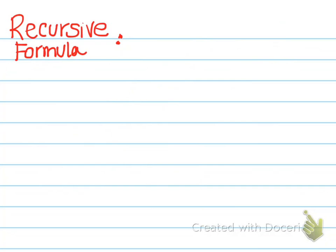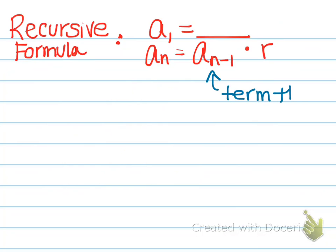We also have recursive formulas for geometric sequences. It looks very similar where you need the first term, a sub 1, whatever that is. And then you have a sub n equal to a sub n minus 1 just like before except now we're going to multiply times r. This is the term that came before and r is still our ratio.